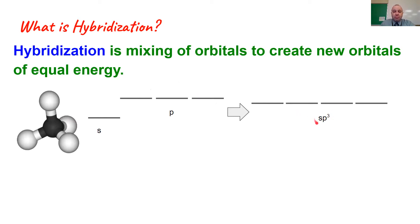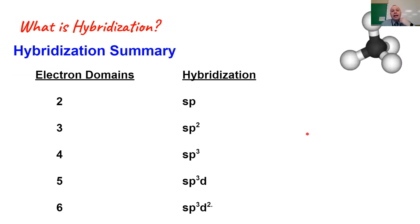The name of the orbital that we come up with is based on what went into the blender. So if one s orbital and three p orbitals go into the blender, then the new orbitals that come out are sp3. Imagine there's a little one as a superscript here that we're not showing. So the name is based on what went into the blender to form it.